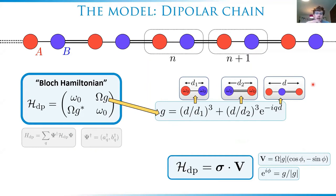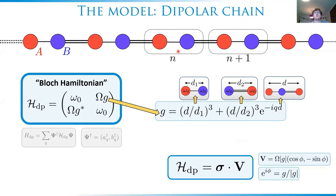Here's the model. Without light-matter coupling, we have the chain of metallic nanoparticles. In the unit cell there are two nanoparticles, labeled A and B. Each metallic nanoparticle is modeled as an oscillating dipole — the collective charge oscillation is modeled as an oscillating dipole. The dipole-dipole interactions give rise to collective plasmonic modes across the whole chain. In the bulk, these modes are described by a block Hamiltonian in one-to-one correspondence with the standard SSH model, with an on-diagonal constant energy shift omega-naught, the resonant frequency of the oscillating dipoles.